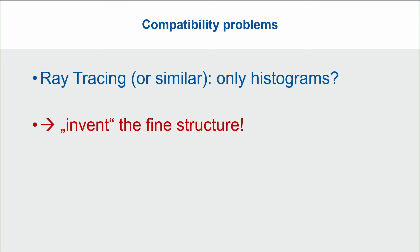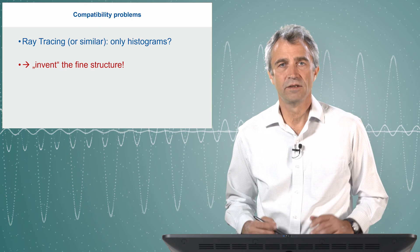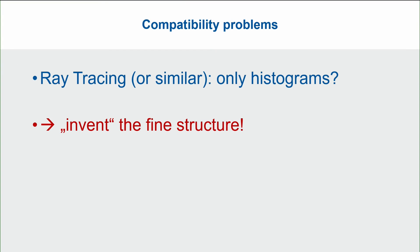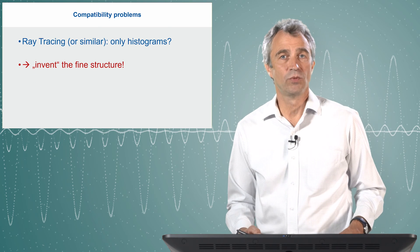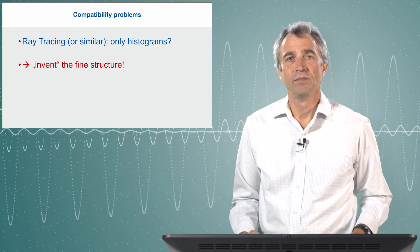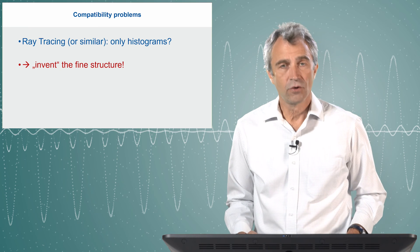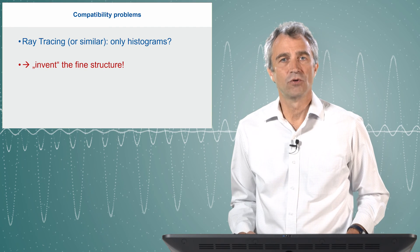What we don't have in ray tracing results is the fine structure inside these delta t intervals. The solution is: we simply invent it. One might say we cannot invent a physical simulation result, but the answer is that nobody can identify fine structure details inside temporal intervals if these temporal intervals are small enough. The appropriate interval size can be compared with the time corresponding to masking effects of our hearing — so fine structure in smaller intervals affected by masking is not audible.